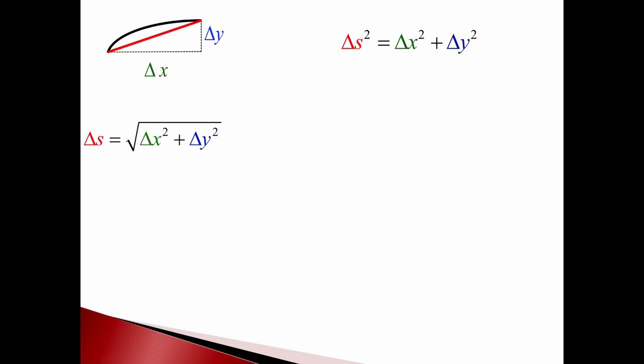The problem is, if you stare at that for a second, I got a delta x and a delta y. If I'm going to write down a Riemann sum, it's got to be a function of some variable, either x or y, one, but not both.